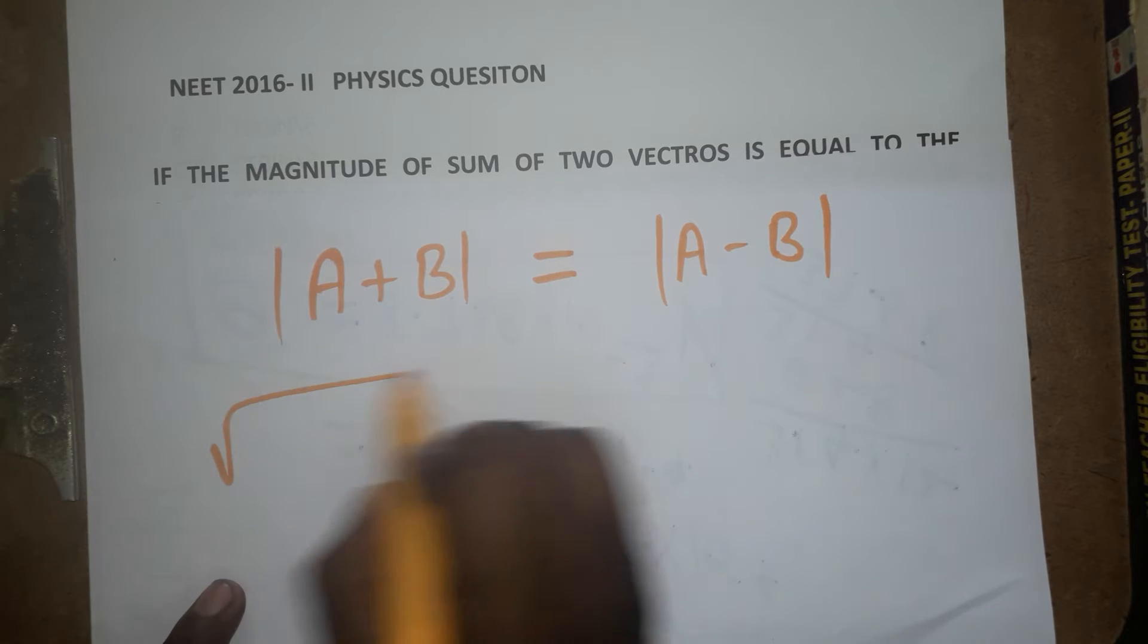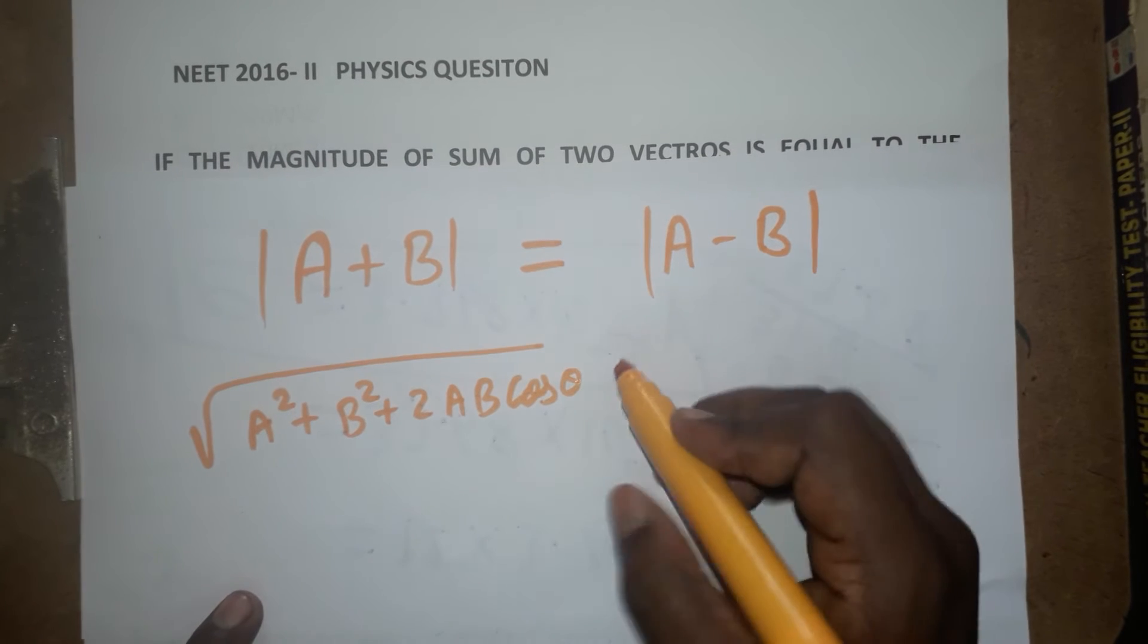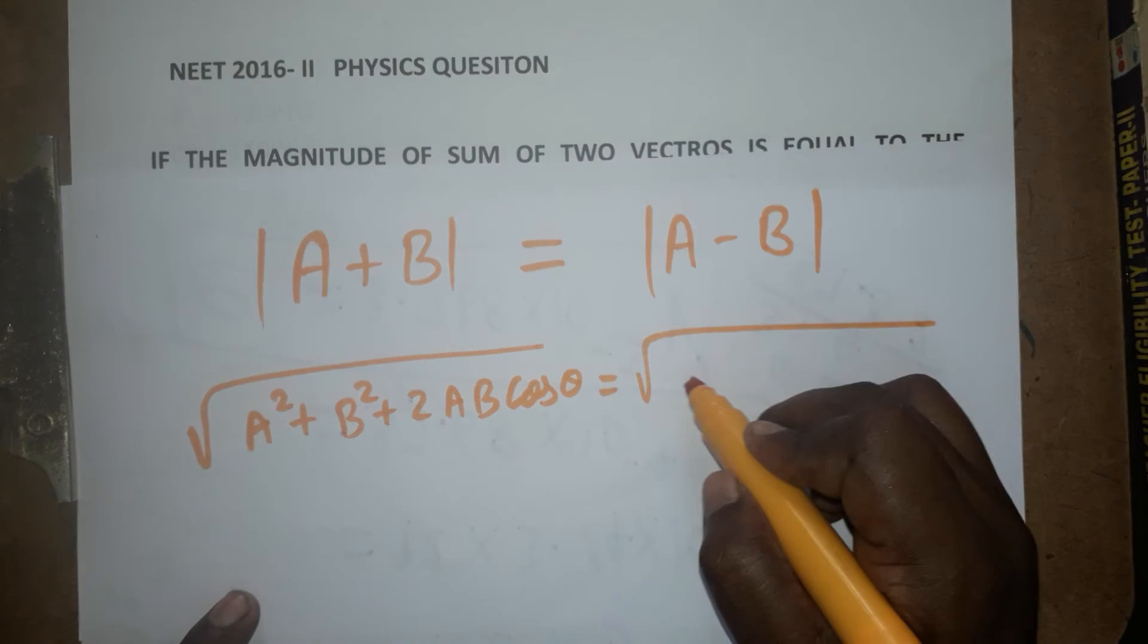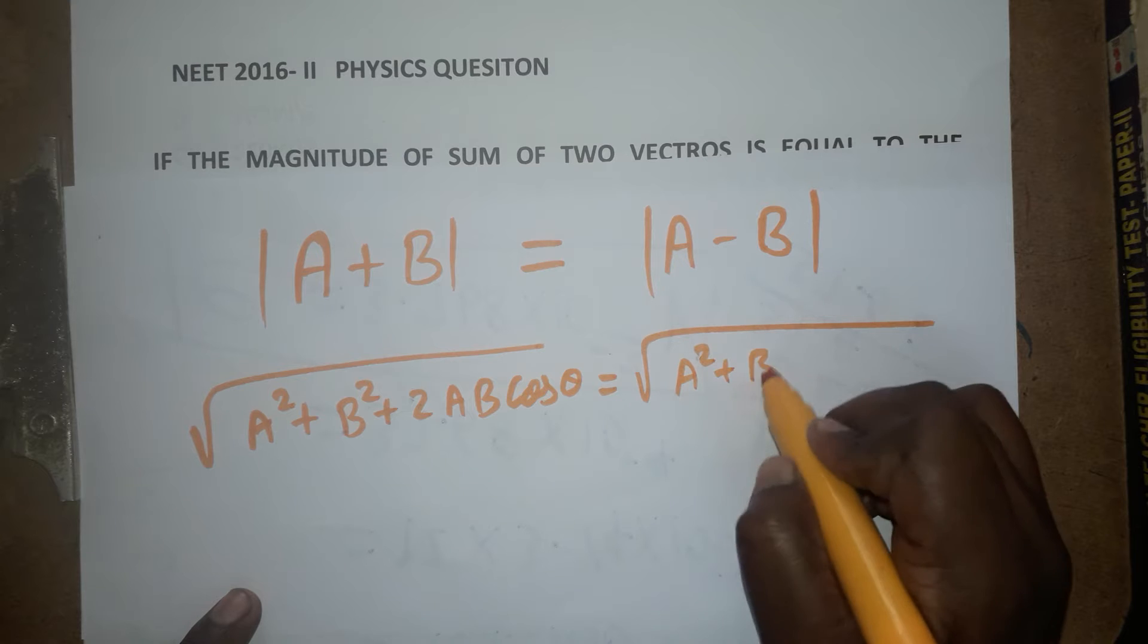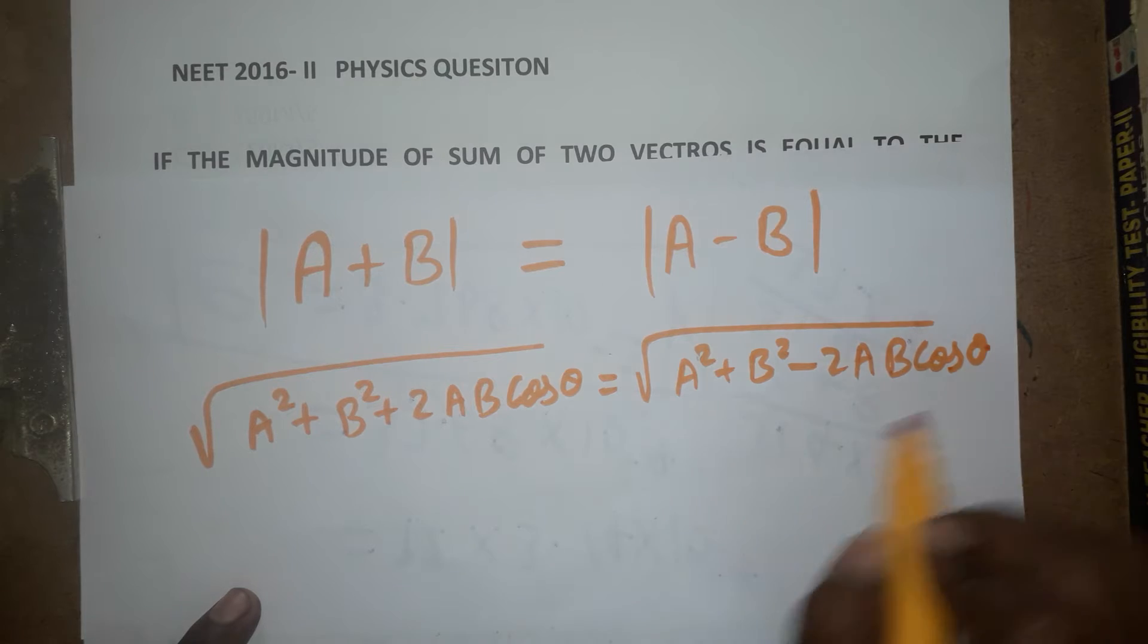This solution, the resultant is going to be a square plus b square plus 2ab cos theta. We know this one is the parallelogram law of vectors. Is equal to root of a square plus b square minus 2ab cos theta.